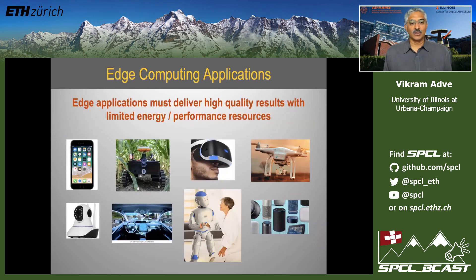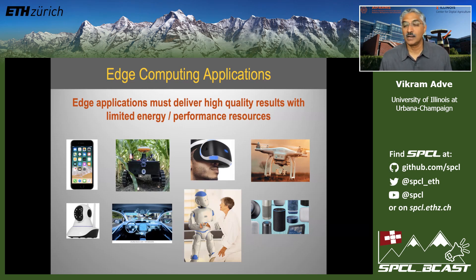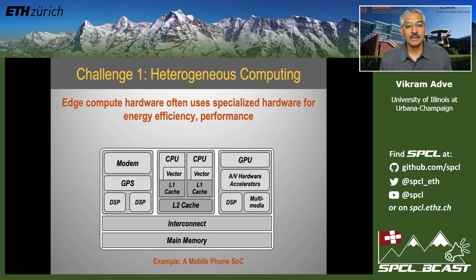There are many applications becoming increasingly important today that run at the edge of the network using relatively small, resource-constrained devices, yet must deliver very high quality results under severe resource constraints. Mobile phones, mobile robots, AR-VR headsets, drones, autonomous vehicles, smart devices — to get the functionality and energy efficiency they need, these systems almost universally rely on specialized hardware: accelerators of various kinds, programmable ones like GPUs and sometimes FPGAs, but also domain-specific accelerators. One of the biggest challenges is that programming these systems can be extremely challenging.